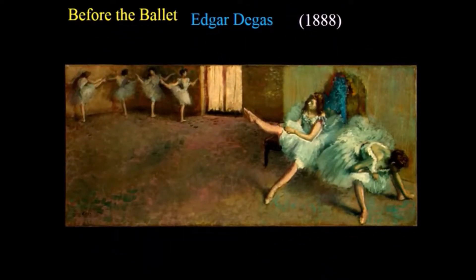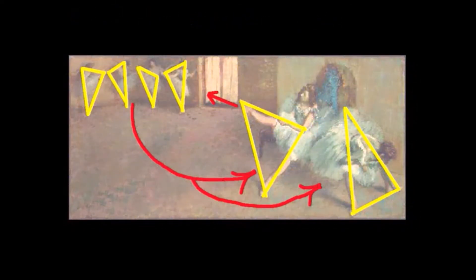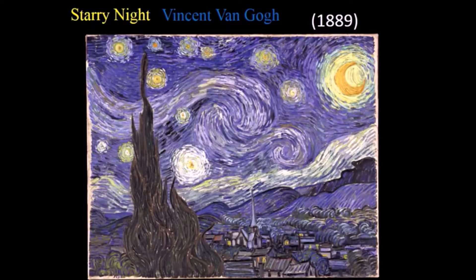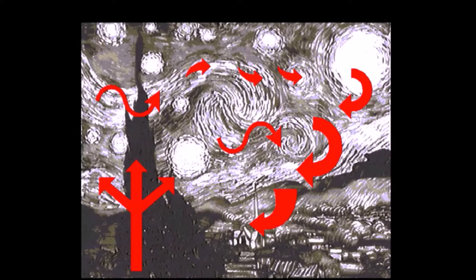Rhythm is how the eye is led from one part of the design to another. Going back to Degas' painting, the outstretched leg directs the eye to the group of four ballerinas, then the eye sweeps through the negative space to the two seated ballerinas. Notice too the skillful use of triangles in creating the composition. The rhythms in Van Gogh's Starry Night are much busier — the eye will travel quickly in multiple directions and rhythms.